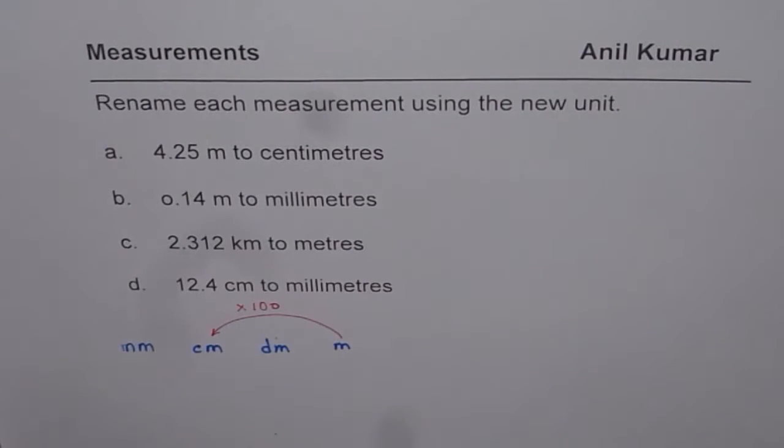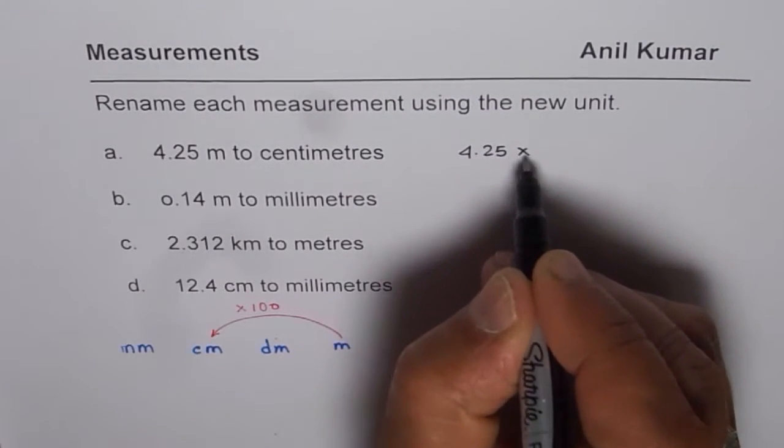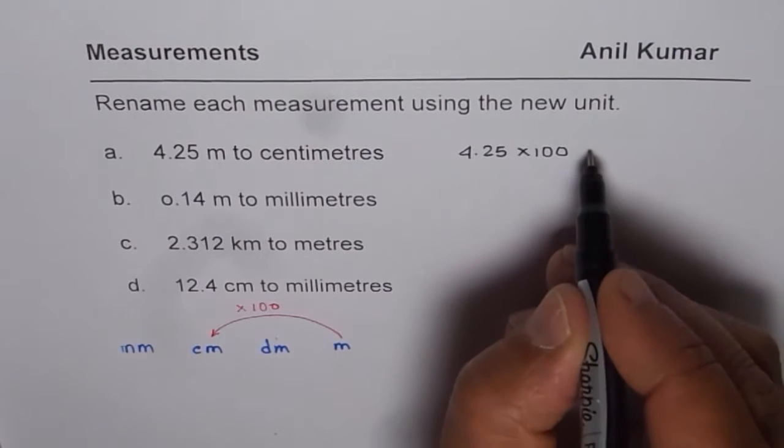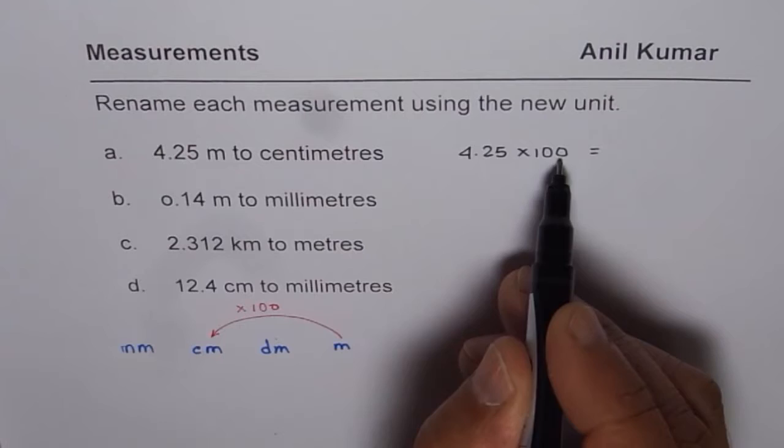So let us do 4.25 times hundred. So when you times by hundred, you get a bigger number. 4 times hundred is 400. So you get an idea.